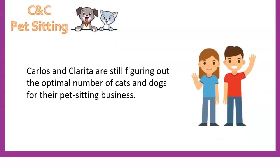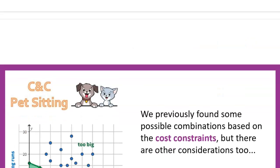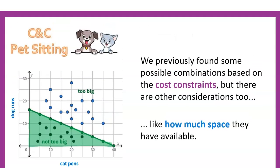Let's revisit Carlos and Clarita and their pet sitting business — they're still figuring out what mix of cats and dogs to house. In the last lesson we looked at cost constraints, finding combinations under their budget, and discovered those combinations graphed as a line with everything underneath it shaded. But they also have other constraints, including how much space they have available in their shed.